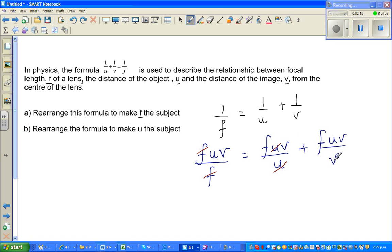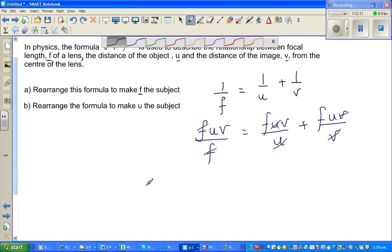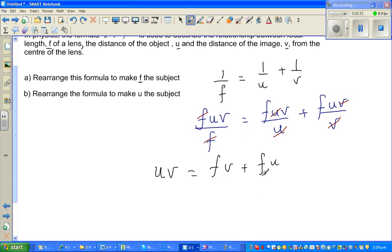So we don't have any denominators. Now you have uv = fv + fu. I want to make f the subject, so what can we do on the right-hand side? I can factor out f, so that is f(v + u).